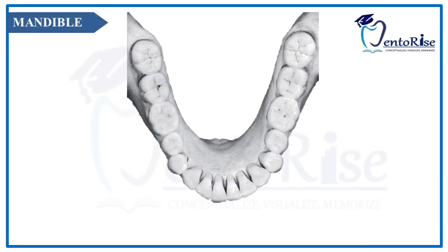We know that the mandibular teeth erupt earlier than the maxillary teeth. Starting with the mandible first, the first tooth to erupt in the mandible — or we can say the entire oral cavity — is the permanent mandibular first molar. This can be designated with number 6, since it is the sixth tooth from the central line.